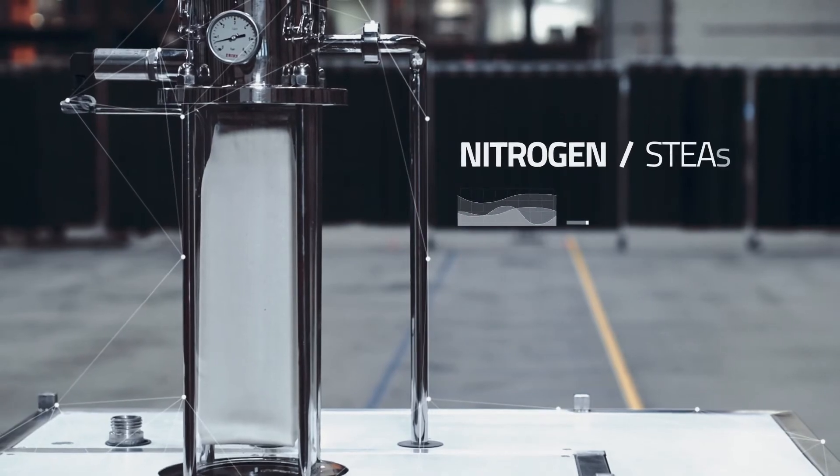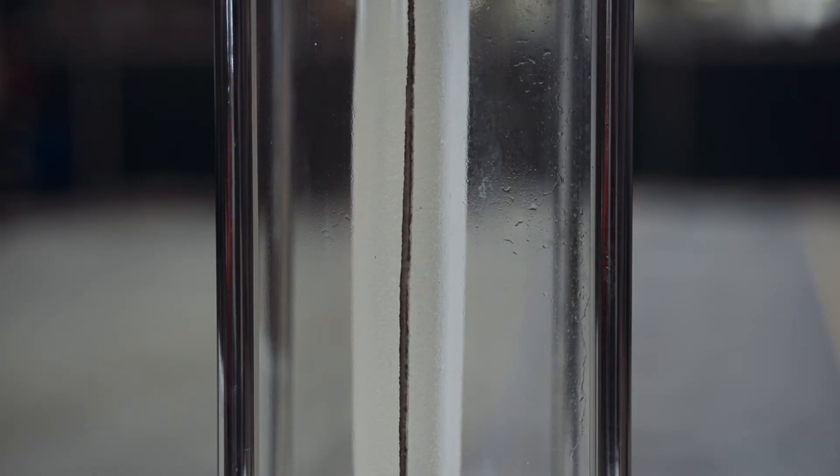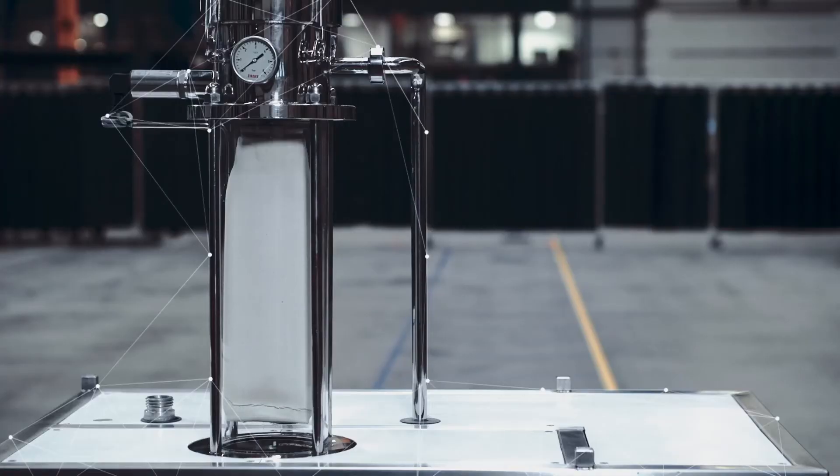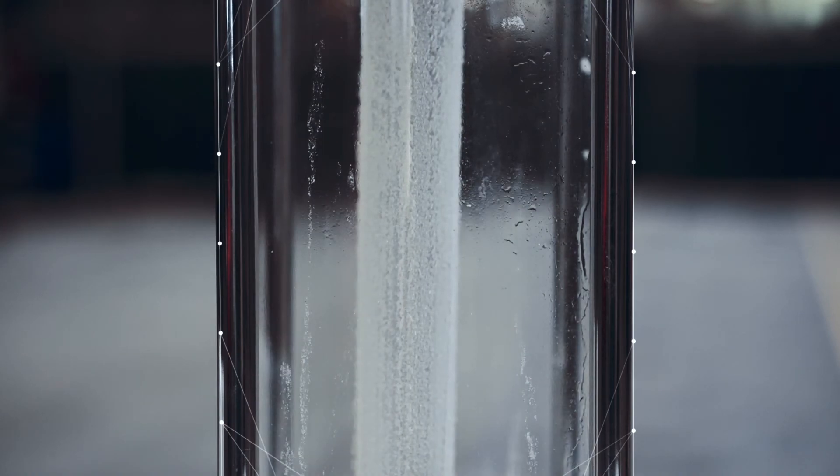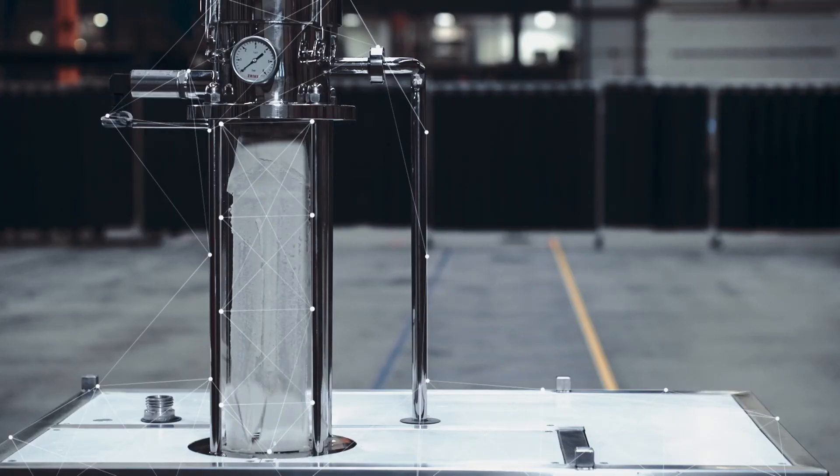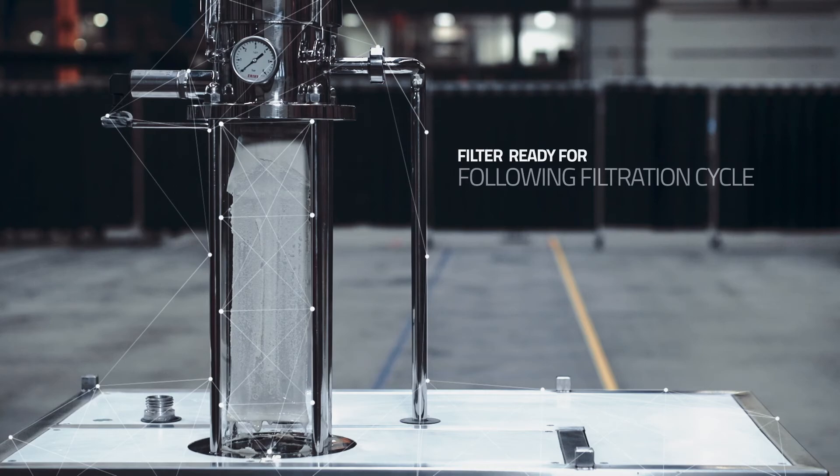When the cake is dry, the cricket elements are back-pulsed from the filtrate side to discharge the cake. The filter is now ready for the following filtration cycle.